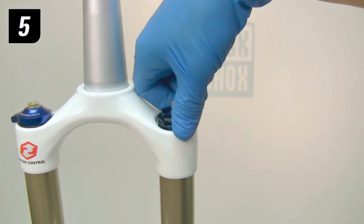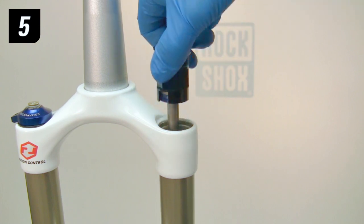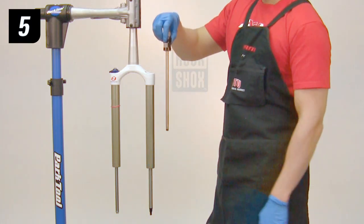Unthread the top cap completely, then remove the entire top cap assembly from the fork. Set the top cap assembly aside.